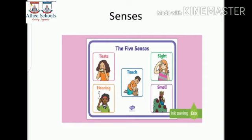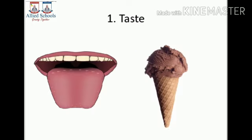Our eyes, ears, nose, tongue, and skin are our five sense organs. Number one is taste. We taste with our tongue. It helps us to enjoy the different flavors of food. We can talk clearly with the help of our tongue.